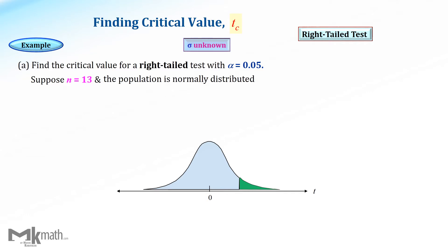Let's take a look at the first example. Find the t-critical value for a right-tailed test with alpha equal to 0.05 and a sample size of 13. Assume that the population standard deviation sigma is unknown and the population is normally distributed.